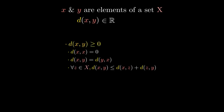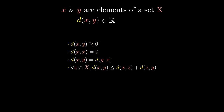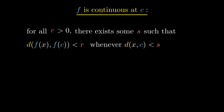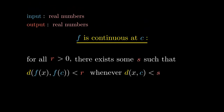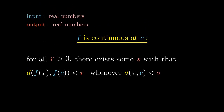For example, the distance between two things is always either positive or zero, and the distance from something to itself is always zero. Now that our definition is phrased in terms of a general distance function, we can apply it to any set which has a notion of distance defined on it.